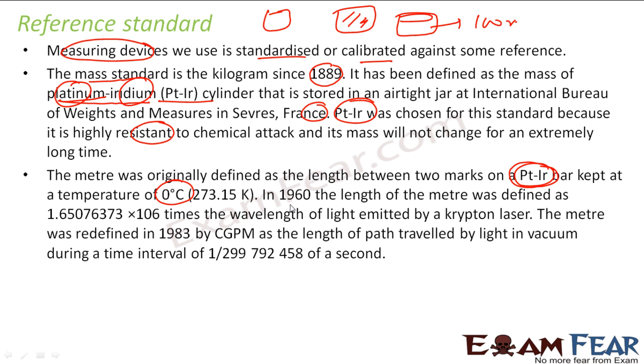They changed it because, again, this guy was a little not reliable. In 1960, they changed it and they told that 1650763.73 times 10 to the power 6 times the wavelength of the light emitted by Krypton laser, that is what they defined the meter to be. Again, they changed it in 1983 because they didn't find this guy also much reliable. This has nothing but the distance traveled by light in vacuum in these milliseconds.